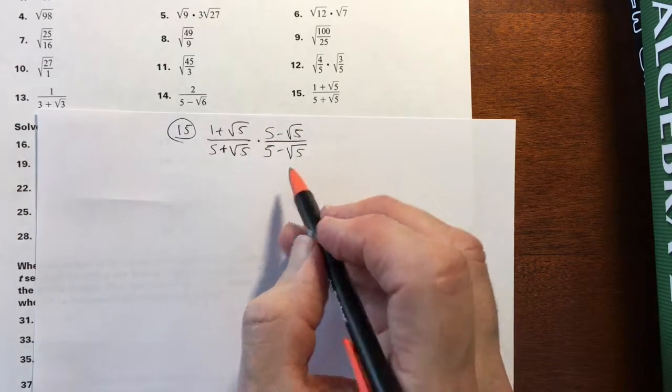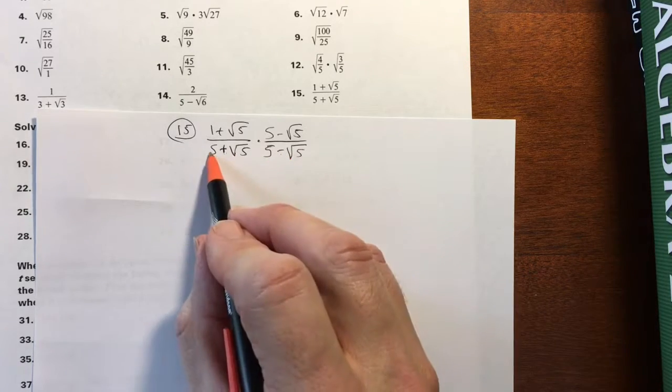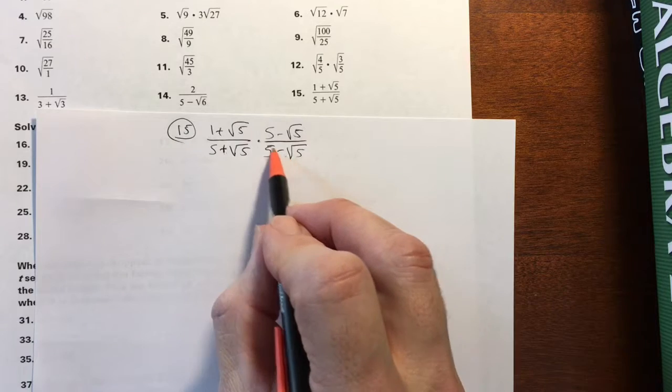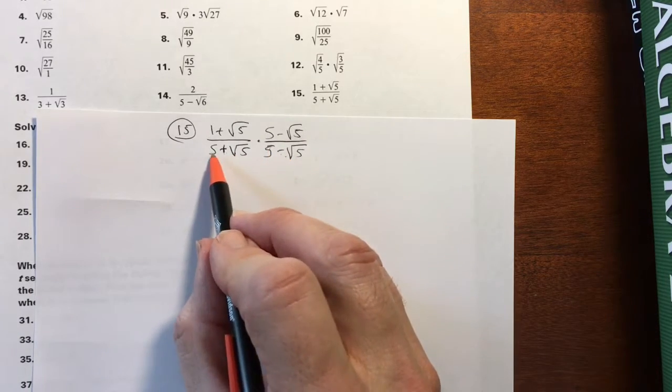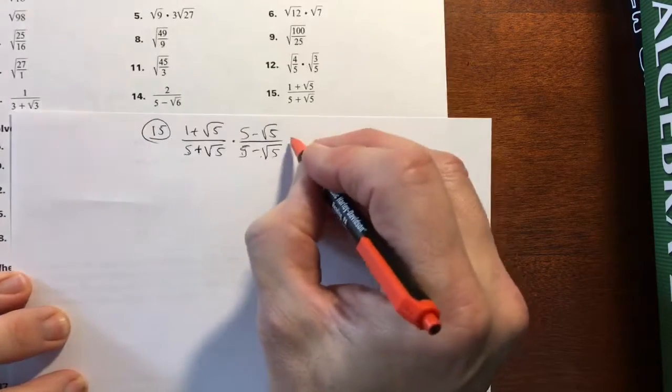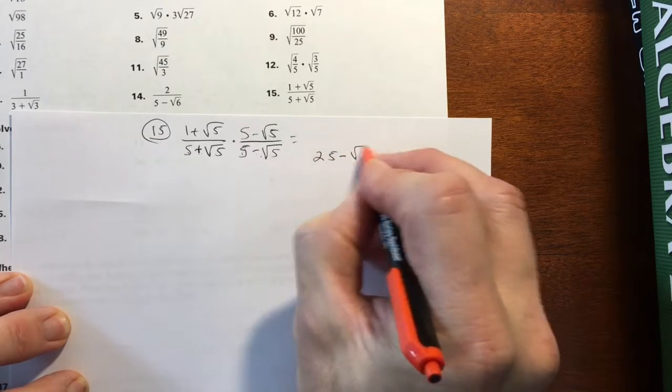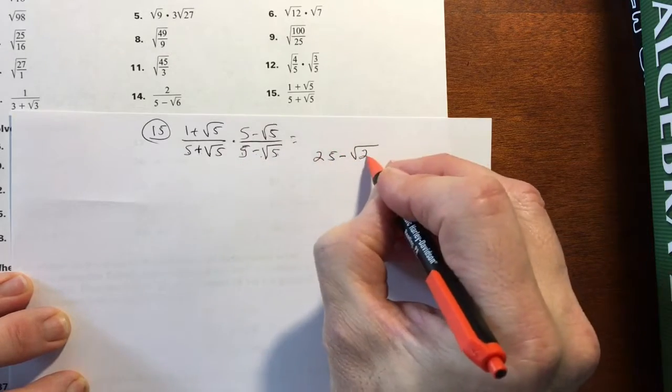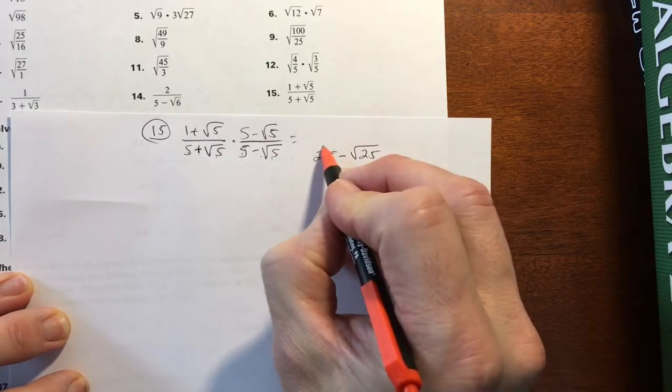And I showed you an example earlier. By having these different signs, the middle term will cancel out. You have a negative 5 square root of 5, and a positive 5 square root of 5. They cancel out. So then all you have to do is square of the first number is 5 times 5, which is, I'll put it over here, which is 25 minus the square root of 5 times 5 is 25 as well.